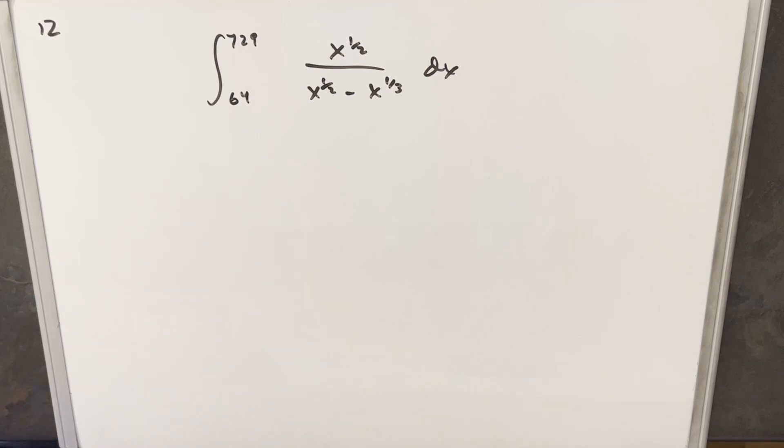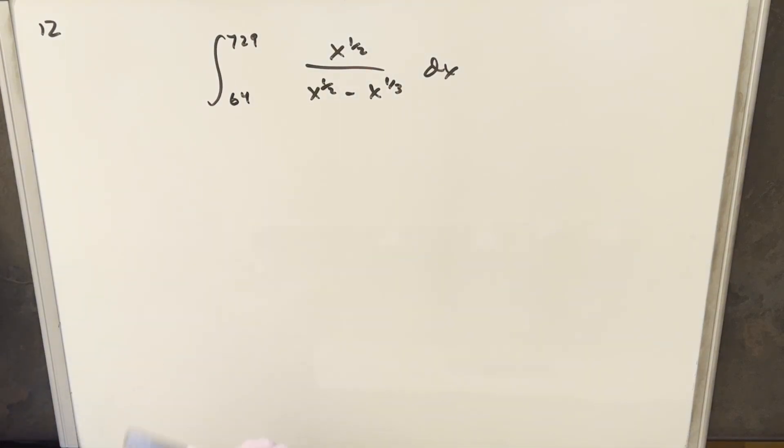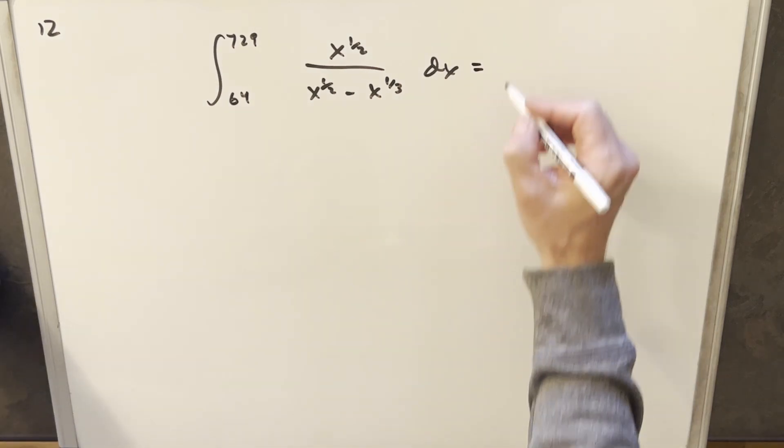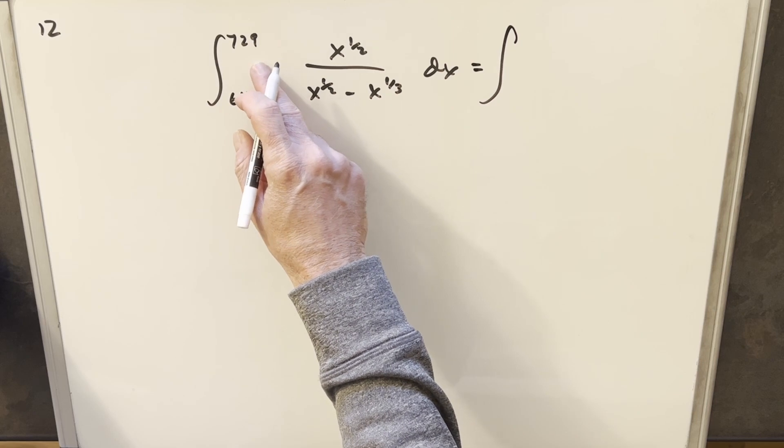Okay, so to start I'm going to transform this thing. I'm not comfortable with a few different things. Even the bounds are a little scary. I'm going to notice 729 is 3 to the 6th power.